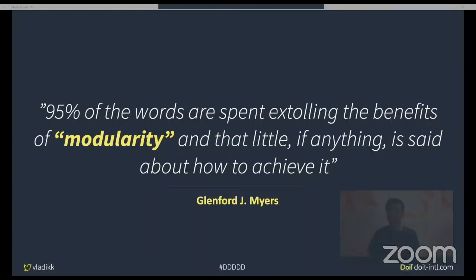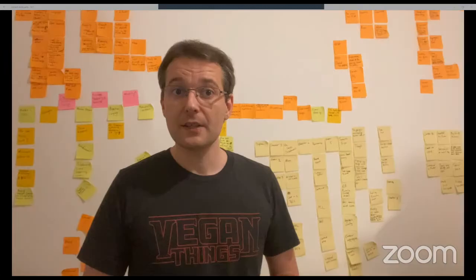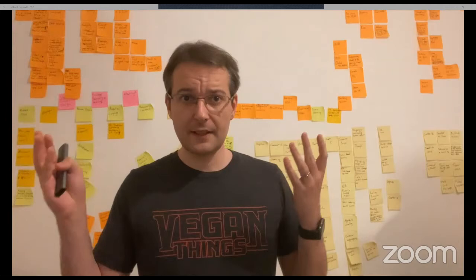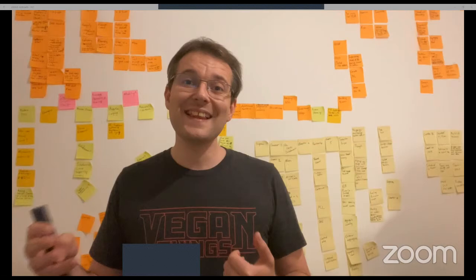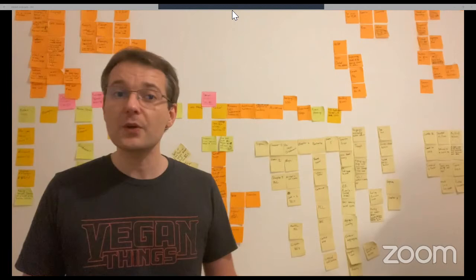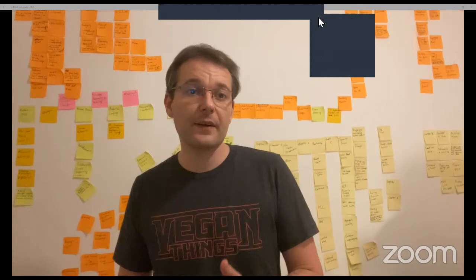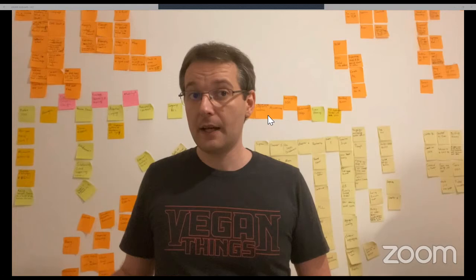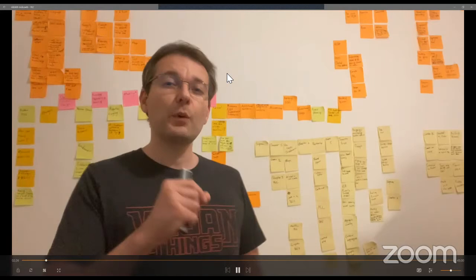We decided to give this hip new architectural style a try. About three months later we found ourselves in a huge mess. What happened was we concentrated our efforts on the cool technological things but we didn't pay due attention to the more fundamental stuff — modularity, and how to achieve it. We invested in service frameworks and modern messaging platforms but didn't think over how to properly decompose a system into microservices. We naively thought that the smaller the service, the better — and that led us straight into the chains of a distributed monolith.